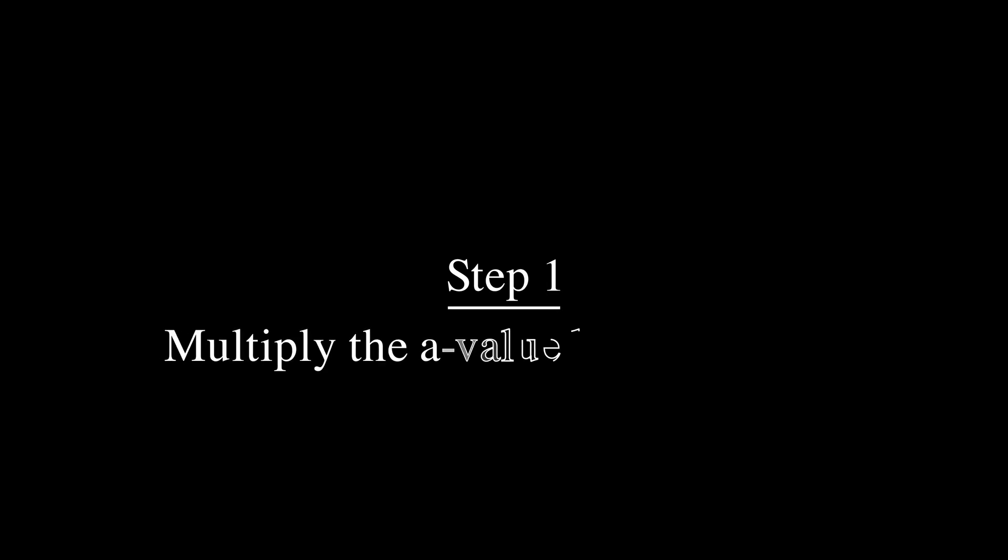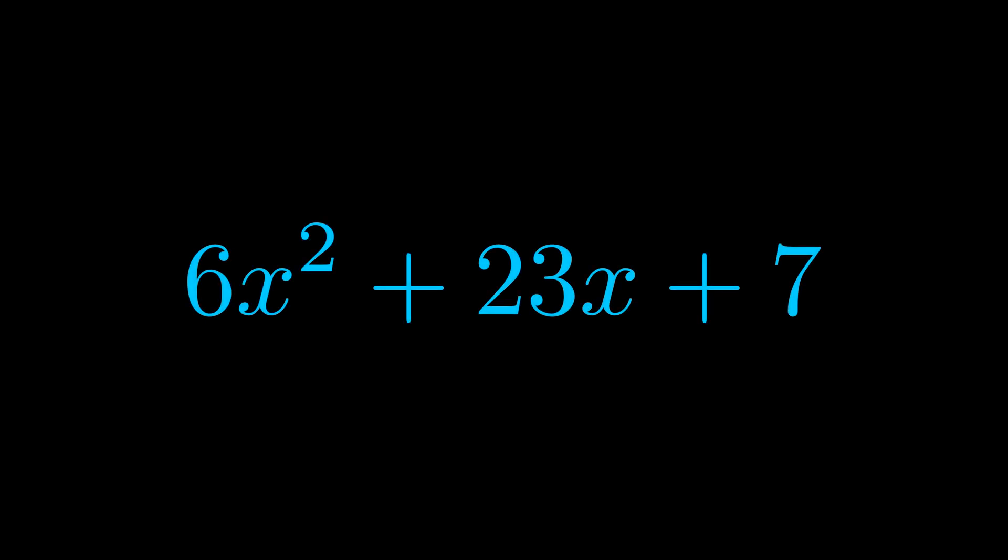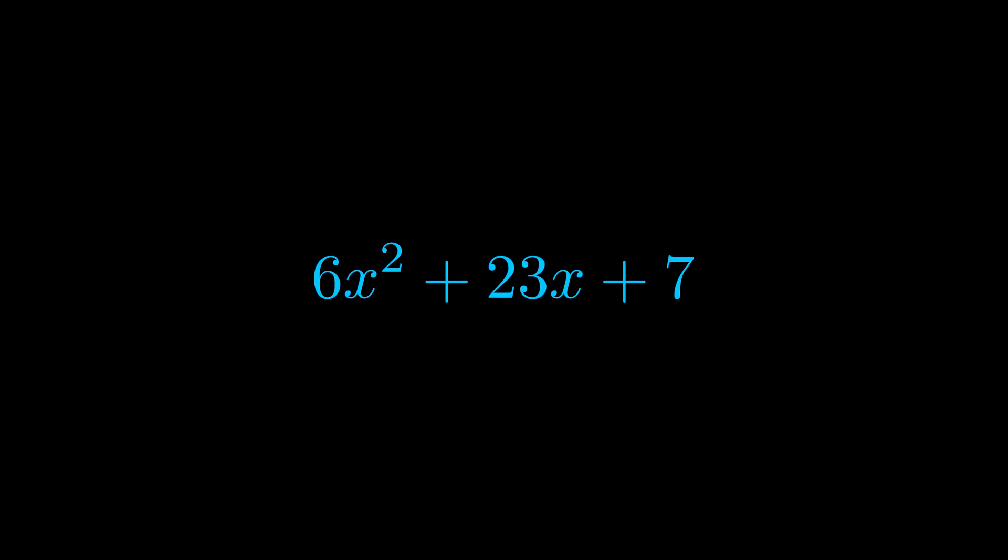Step one when factoring an equation of this form is to multiply the a value by the c value. Here we can see that our a value is the coefficient on the x squared term and our c value is the constant term.